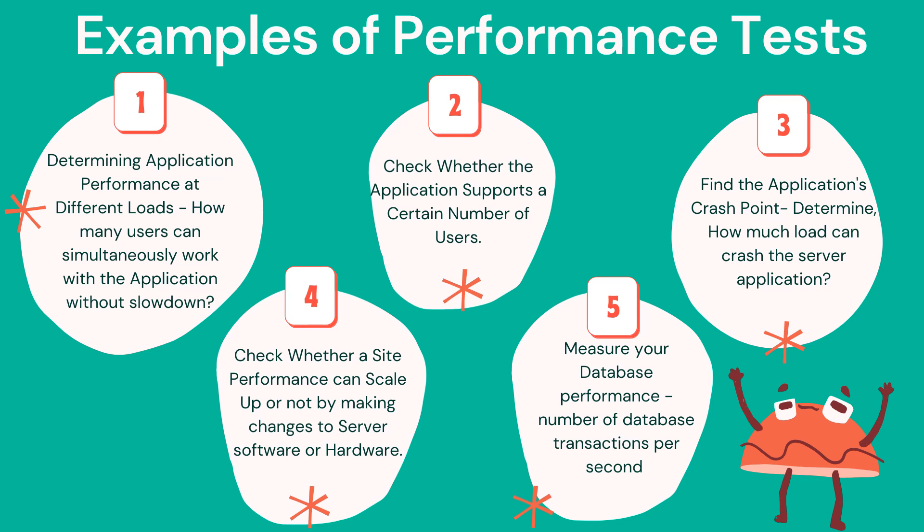Here are some example performance test scenarios. One: determine application performance at different loads — how many users can simultaneously work with the application without slowdown. Two: check whether the application supports a certain number of users. Three: find the application's crash point — determine how much load can crash the server. Four: check whether site performance can scale up by changing server software or hardware, such as updating an algorithm or upgrading RAM or CPU. Five: measure database performance by checking the number of database transactions per second and the number of active database transactions.